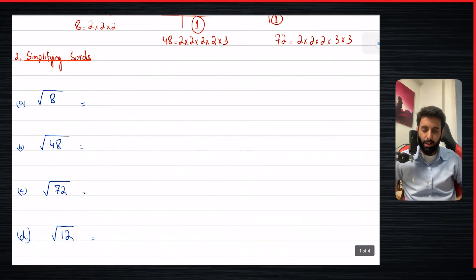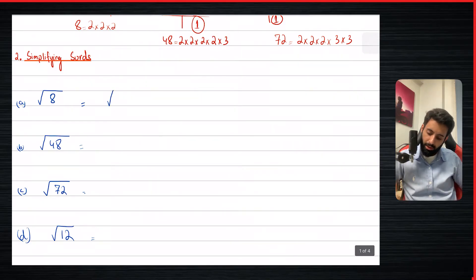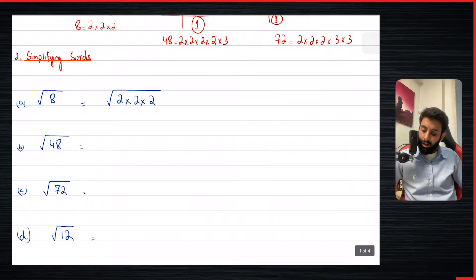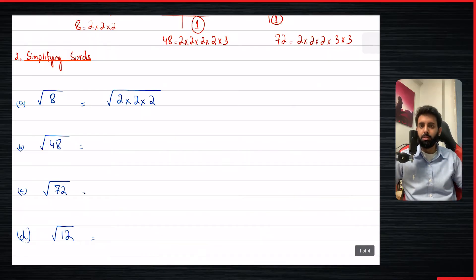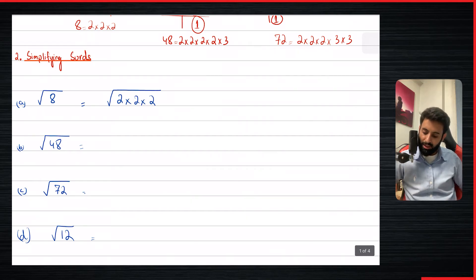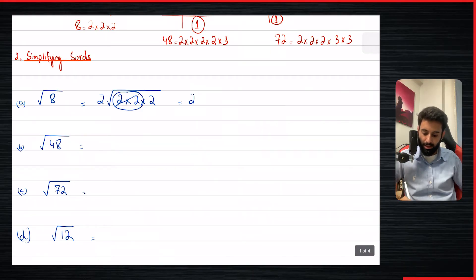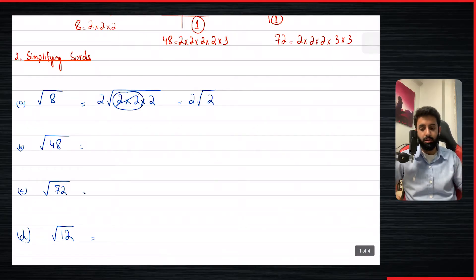Now the question is how do we use this to simplify surds? Well, root eight can be written as two times two times two. When we're simplifying surds, we look for pairs inside the square root. A pair means two — like a pair of socks or a pair of shoes. You can see that you have one pair of two, so you take that pair, bring it outside, and leave whatever is left inside. So root eight becomes two under root two.